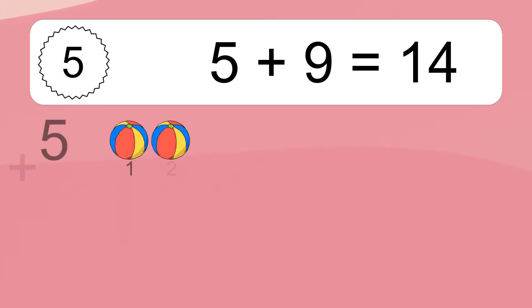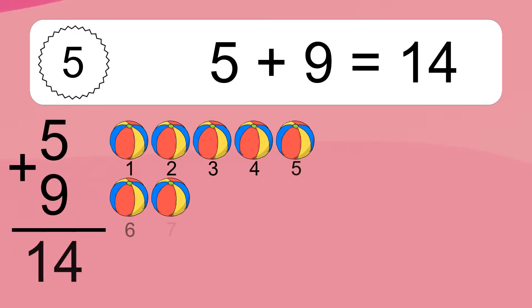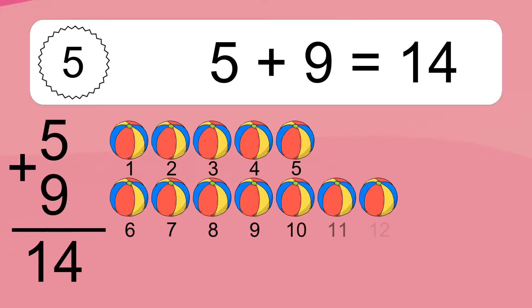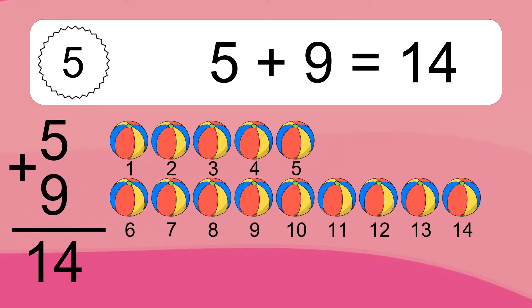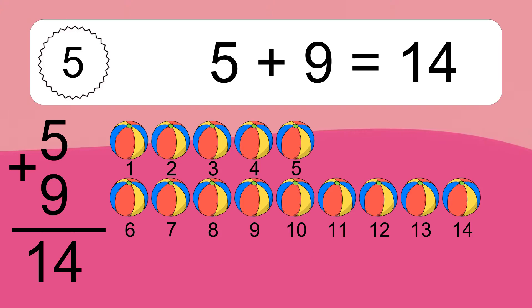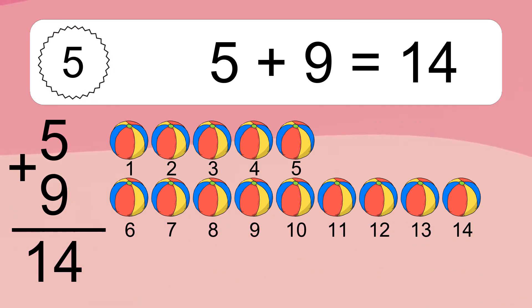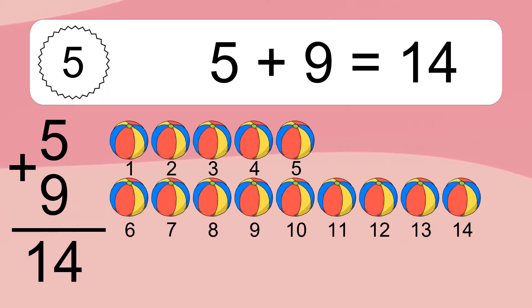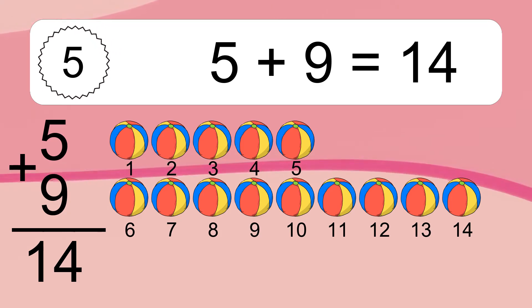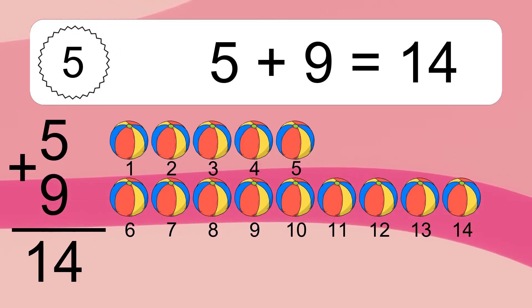5 plus 9 equals 14. Let's count it. 1, 2, 3, 4, 5, 6, 7, 8, 9, 10, 11, 12, 13, 14.